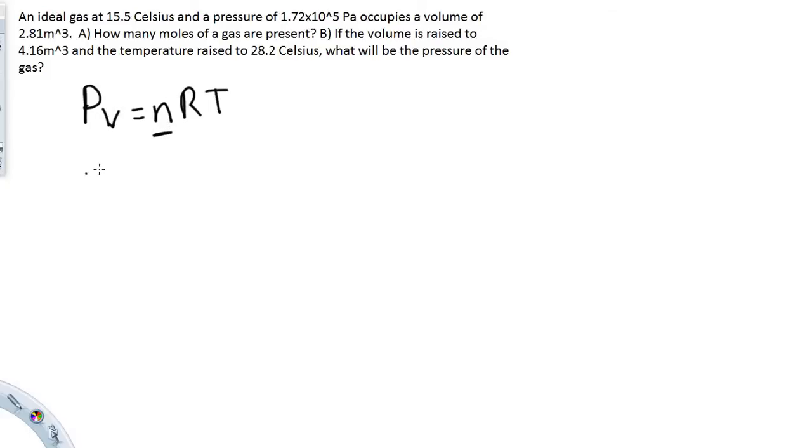So let's rewrite this algebraically to get n on one side. What we're going to do is divide the R and the T over, so we will get n equals PV over RT.